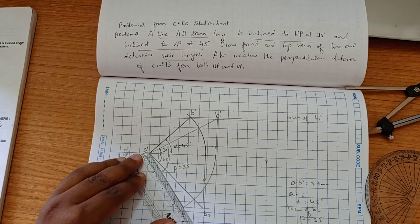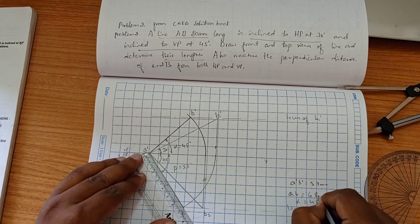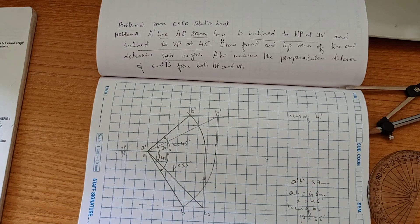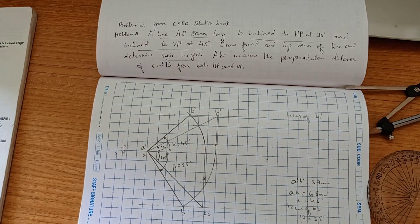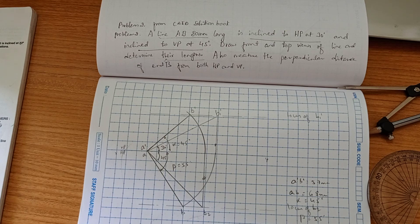AB I am getting around 68mm. So these are the things we have to find out. In projection of lines, you can like the video, subscribe and share, and hit on the bell icon.